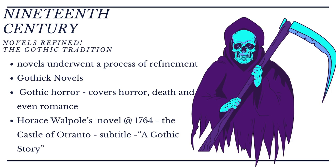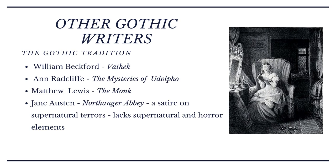Now comes the 19th century, during which novels were redefined and the Gothic tradition began. Novels underwent a process of refinement. These Gothic novels were shrouded with Gothic horror, covering horror, death, and even romance. Horace Walpole's novel of 1764, The Castle of Otranto, with the subtitle A Gothic Story, is a perfect example.